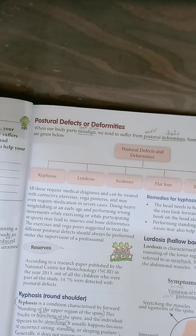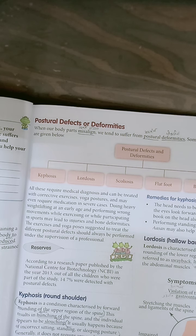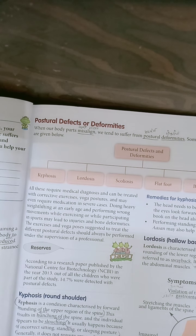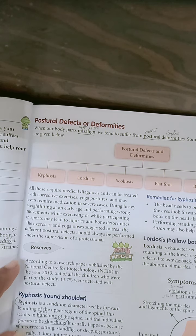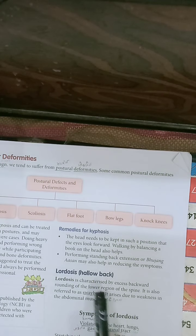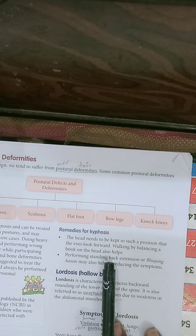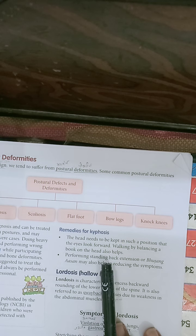The symptoms of kyphosis include: impaired posture, fatigability, backache, disorder of the internal organs, chest deformities, limitation of spinal mobility, neck pain, and spinal deformities. These are the main symptoms of kyphosis related to body posture.